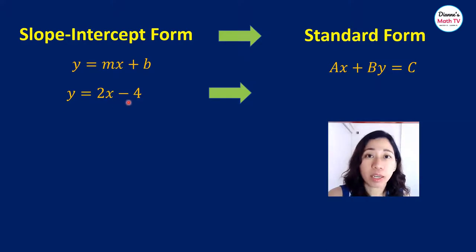Now, let's look at this equation over here: y equals 2x minus 4. We want to put our x on the other side together with your y. So how will we do that? We need to remove the 2x here, so we need to subtract it from both sides.